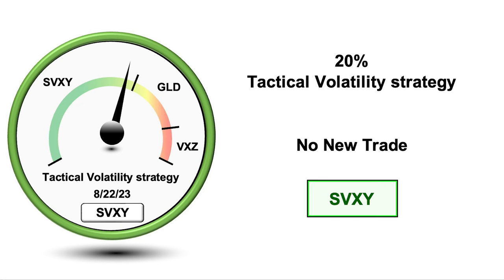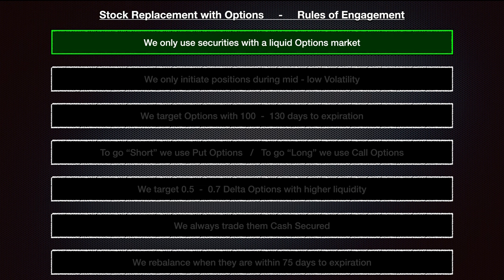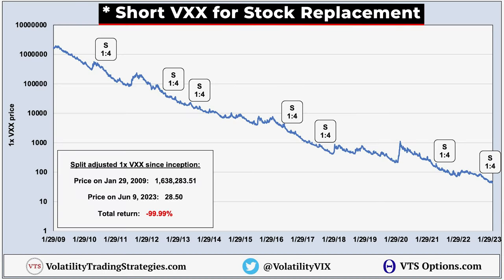We're already in a trade within our tactical volatility strategy, but just for today, let's assume that this is a fresh new position and we just got the green light to jump into a new trade. So here we've got our rules of engagement and we're just going to make sure we don't violate any of these rules. Number one: we only use securities with a highly liquid options market. In the case of our tactical volatility strategy, we always use the VXX as our underlying security.